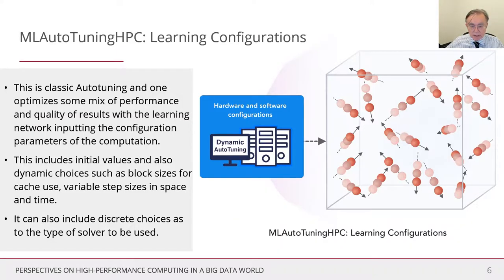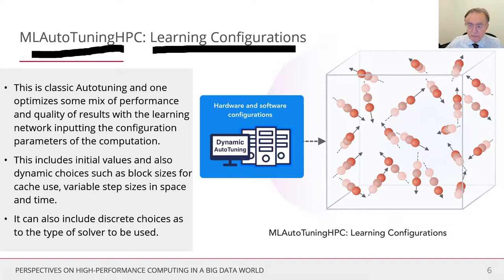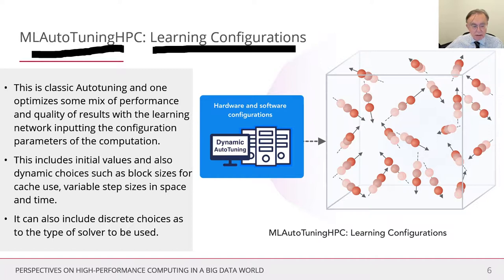Let's start with the simplest case, ML auto-tuning HPC — learning configuration. This auto-tuning is very well established and used to choose optimal parameters, optimal block sizes for matrix arithmetic, and things like that. They're also used to configure big data systems. They're typically done by running examples initially or learning on the fly as you run things. This includes both initial values and also dynamic choices such as step sizes in space and time. You could also include discrete choices as to the type of solver or the type of machine learning to use.